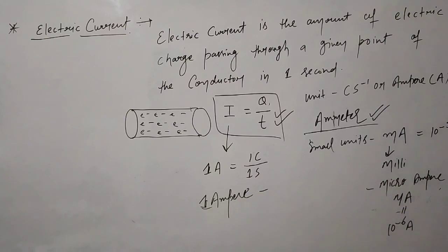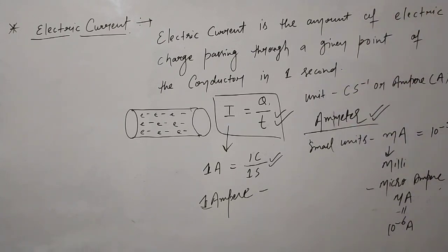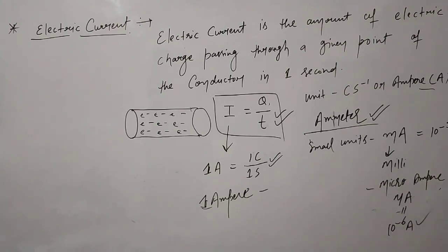What is an insulator? Examples of insulators are rubber, paper, and dry wood. Current cannot pass through an insulator. Electricians use rubber gloves because rubber is an insulator and current cannot flow through it. We use rubber gloves for safety.